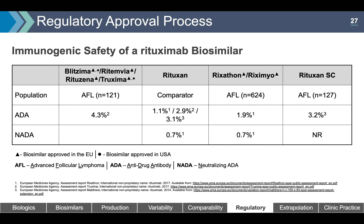Looking at the immunogenic safety of rituximab biosimilars in Phase 3 clinical trials: the range of anti-drug antibodies is very low, at 0.7% to 4.3%, and very similar between the reference biologic and biosimilar.